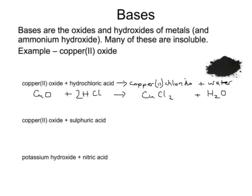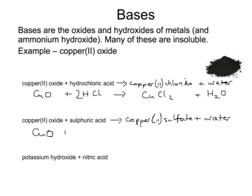The second equation: copper oxide is reacting with sulfuric acid, so again we'll get a salt. This time it will be copper 2 sulfate plus water. In terms of symbols, copper oxide is still CuO. Sulfuric acid, you'll have to learn, is H₂SO₄. Copper sulfate has the formula CuSO₄, and water is H₂O — so this one balances nicely as it is.